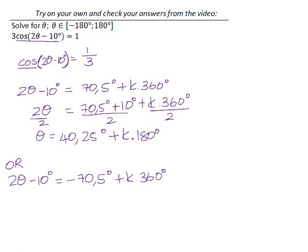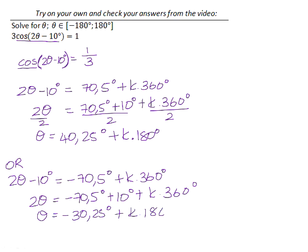If we have a look at the or option, again, we need to add 10 degrees to both sides. And then we need to divide through everything by 2. So that will give us negative 30.25 degrees, and we will also have k times 180.